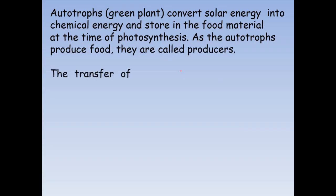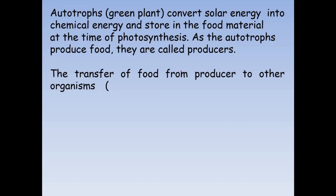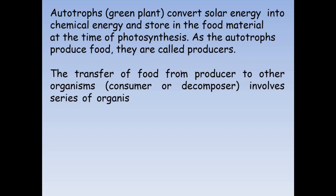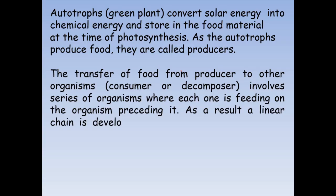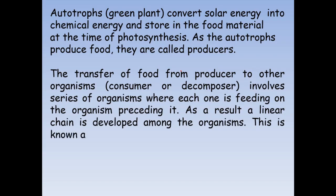The transfer of food from the producer to other organisms involves a series of organisms where each one is feeding on the organism preceding it. As a result, a linear chain is developed among the organisms. This linear chain is known as the food chain.